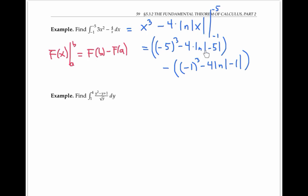Because ln of the absolute value of -5, which is ln 5, actually has an answer, whereas ln of -5 would not exist.